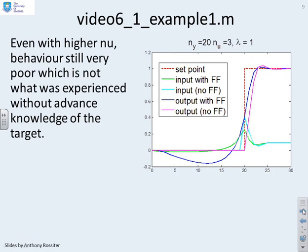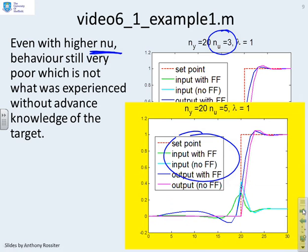Now if I use an even higher nu, you might say maybe I've just not got nu high enough. You'll remember we said if nu is too small you can get poor behavior. Here I've made nu equal 3, and still the output behavior is really quite poor. With nu equals 5, things might be slightly better, but all this jittering around before the target changes is just not needed.